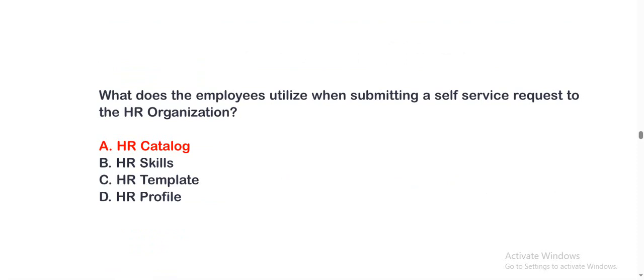What does the employee utilize when submitting a self-service request to the HR organization? Option A: HR catalog. Option B: HR skills. Option C: HR template. Option D: HR profile. The correct option is A.